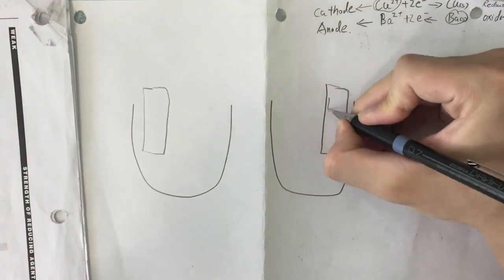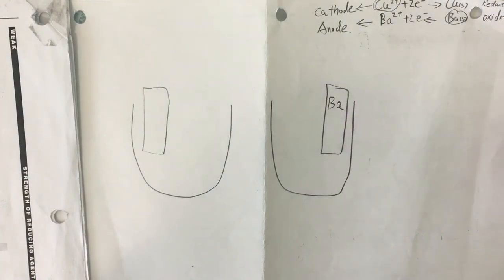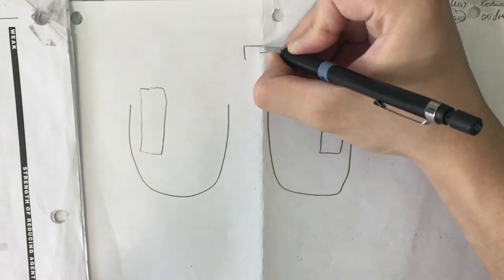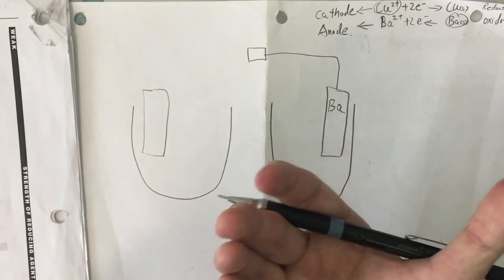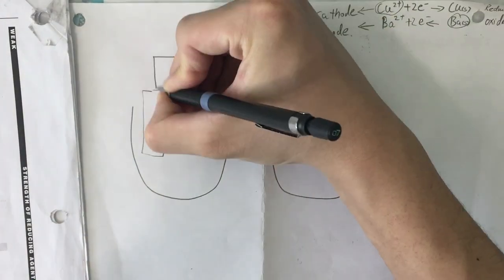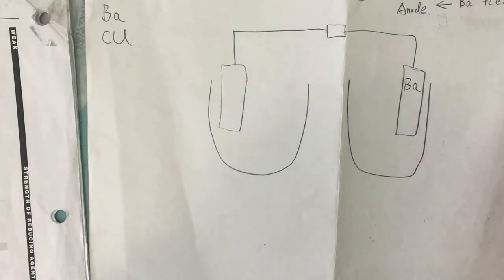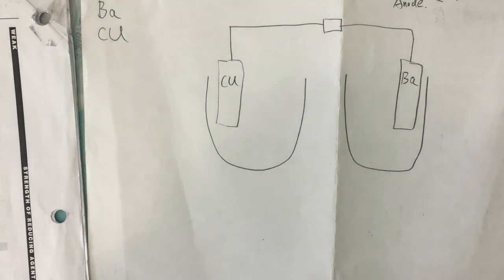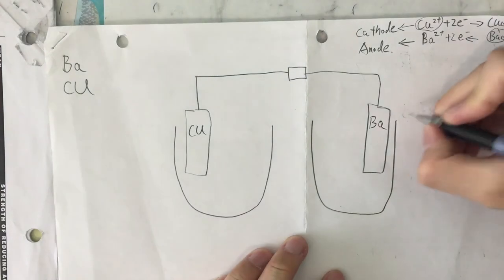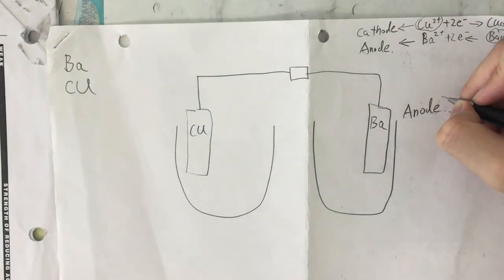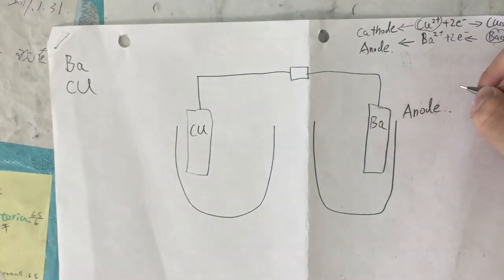We're going to put barium in the beaker and connect them with a wire, and in between we can put a meter, a light bulb, or nothing — it won't affect the result. We also need to connect a copper solid bar as the other electrode. So barium is going to be the anode and copper is going to be the cathode.